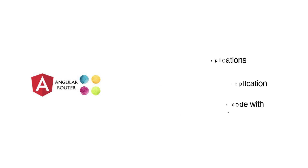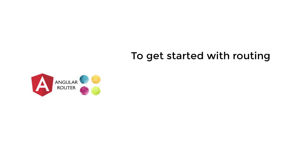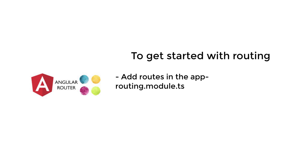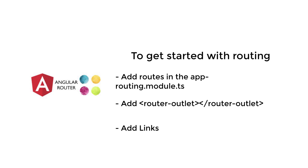To get started with routing we need to do a few things in the application. First, add the routes in app-routing.module.ts. Second, add a router-outlet in app.component.html. And finally, add links to the different routes of the application. Now let's take a look at the application that we'll be building.